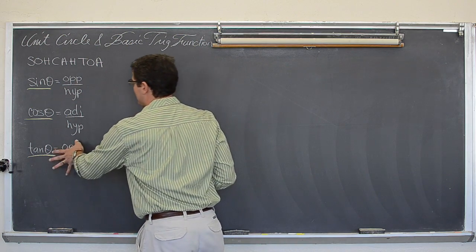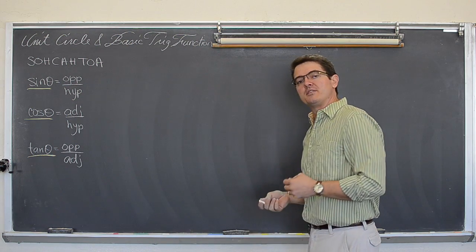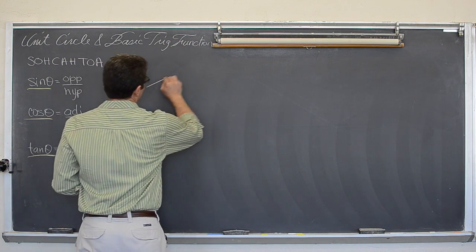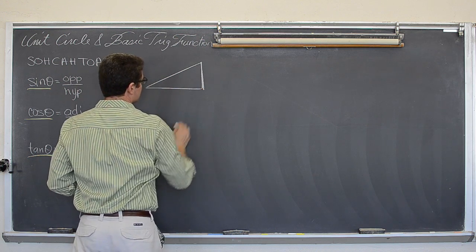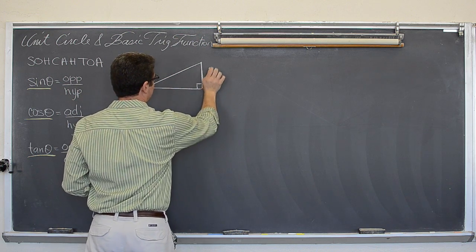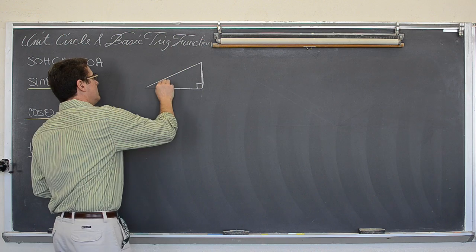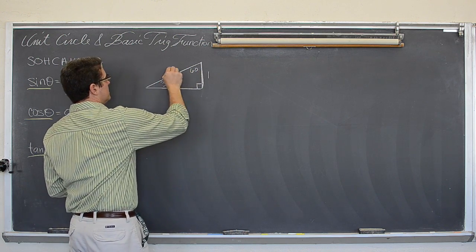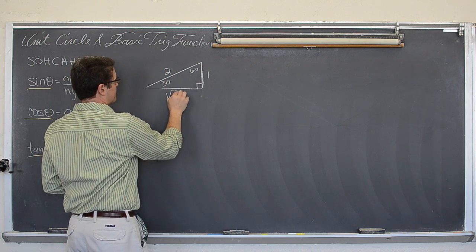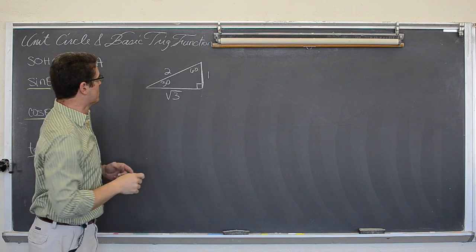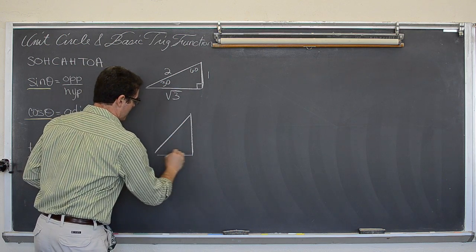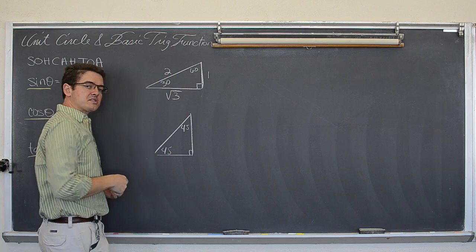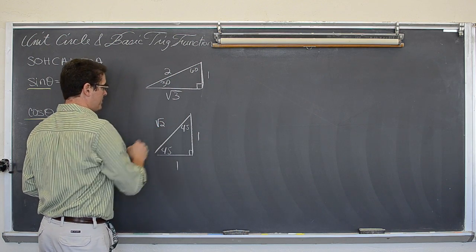These labels are great for when you want to simply work with triangles that are floating around in space. When building up the idea of a unit circle, the two triangles we are most concerned with are the 30-60 triangle, which has sides of 1, 2, and square root of 3 for the side opposite 60 degrees, and your 45-45 triangle, which has sides of 1, 1, and square root of 2.